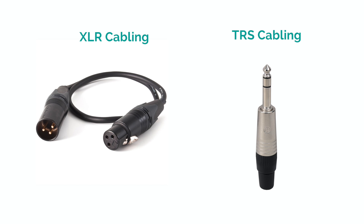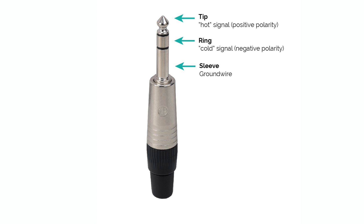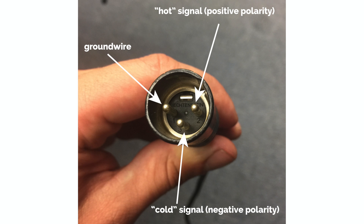Commonly used balanced cables are XLR and TRS, which stands for tip ring sleeve. Just like the TS cable, you can tell a balanced cable by its connectors — both XLR and TRS cables have connectors for the ground, hot, and cold wires.